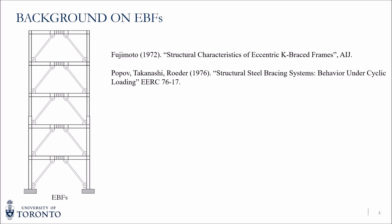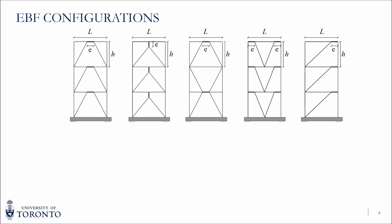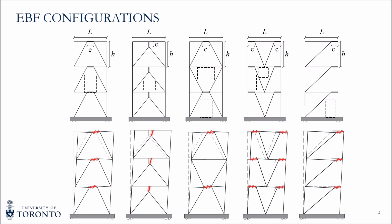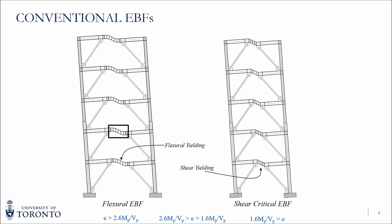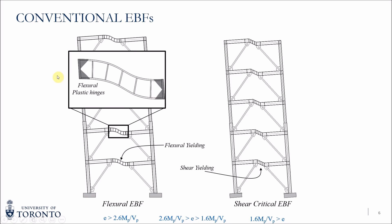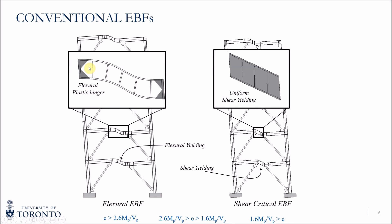Professor Popov then started getting students who carried out research on these systems for more than a decade. You could have a number of configurations when it comes to EBFs, which you can see on the top, and at the bottom you can see the deformed shape. Depending on the length of the link and its sectional properties, you could either have flexural EBFs, shear critical EBFs, or something in the middle. In shear critical links, you get uniform shear yielding, so the whole link is used for energy dissipation — that's why this is the preferred mechanism in EBFs.